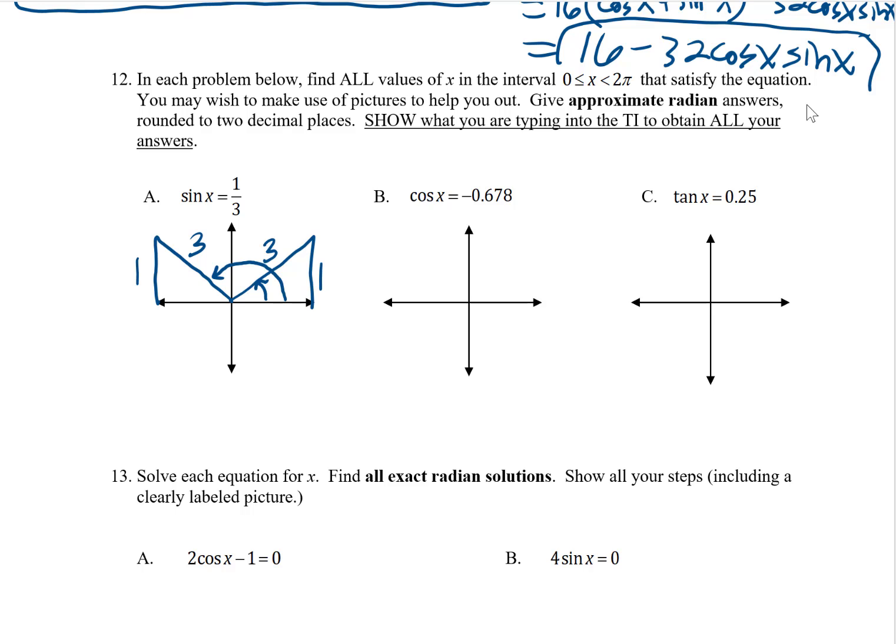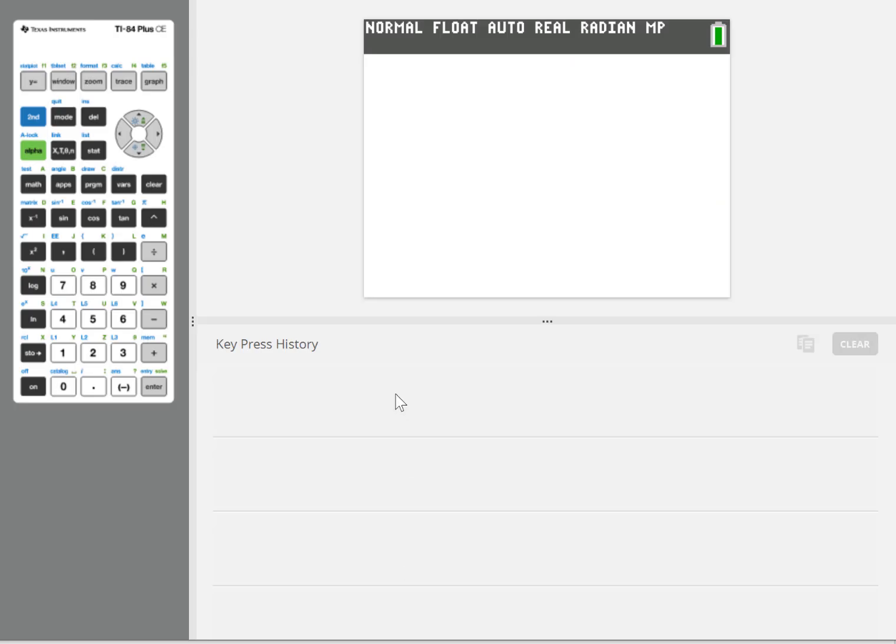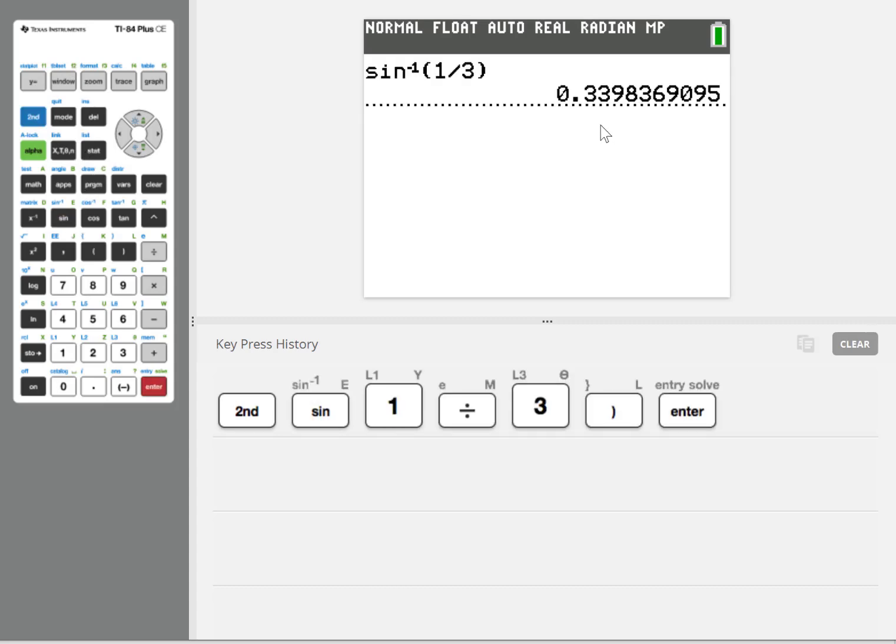Well, I can use the sine inverse function on my calculator to get the first angle. Sine inverse knows about angles between negative 90 degrees and positive 90 degrees, or negative π over 2 and positive π over 2. So it's going to work great for that first angle. How about I call that x sub 1. So the first angle, easy enough, sine inverse of 1 third. On the calculator, I am in radian mode. I'll type in the sine inverse 1 third. And to two decimal places, that ends up being about 0.34 radians.